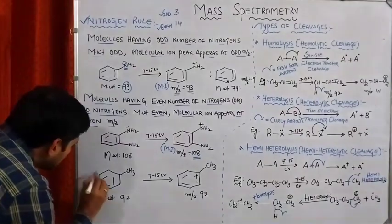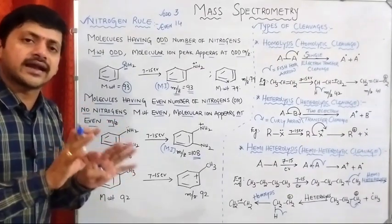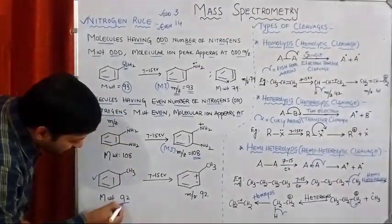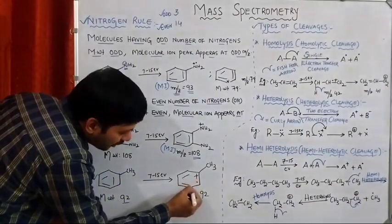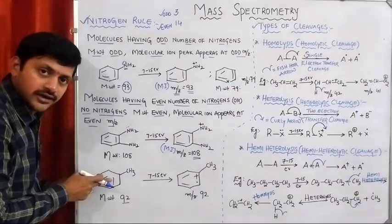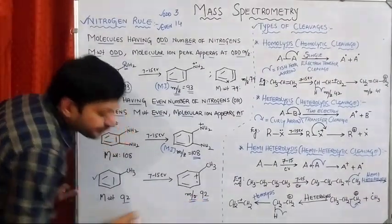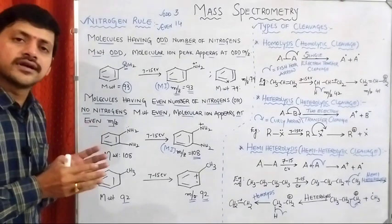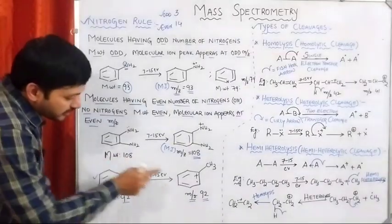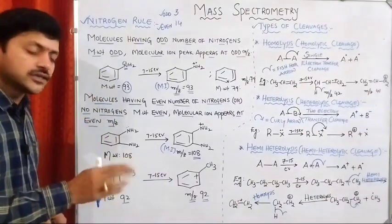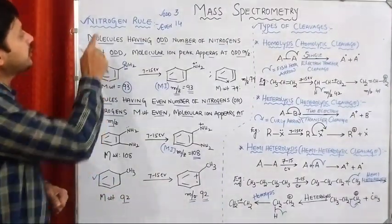See the next example: toluene. Toluene does not contain any nitrogen atoms. Its molecular weight is 92, which is an even number. When subjected to bombardment, the pi bonding electrons allow removal of one electron to produce the molecular ion. The M/Z appears at an even number. So, if a molecule contains an even number of nitrogen atoms or no nitrogen atoms, the molecular ion appears at even M/Z, because those molecules have an even molecular weight.